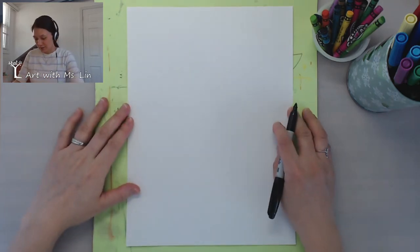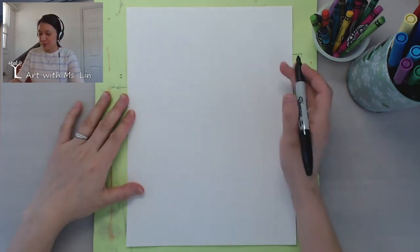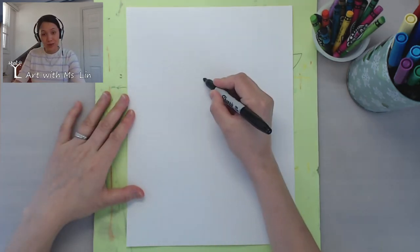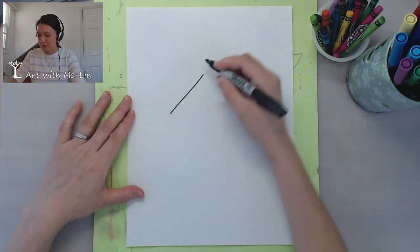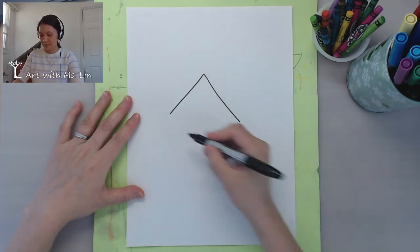So very simple to start. We're going to start with the rooftop of the house which is a triangle. I'm going to try to draw nice and big.